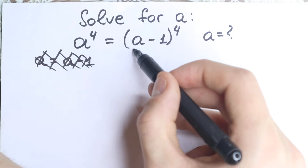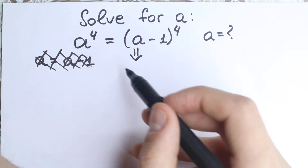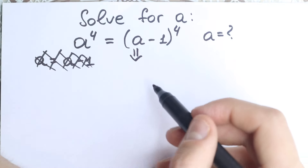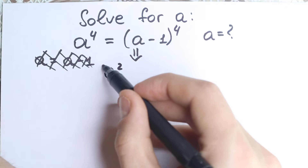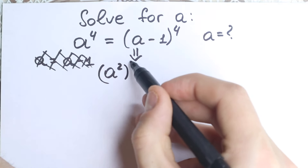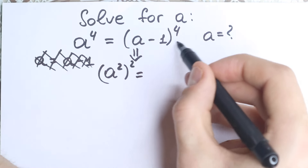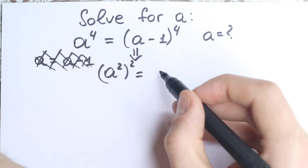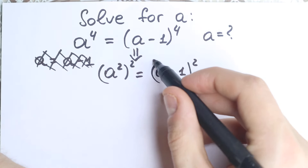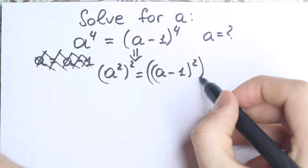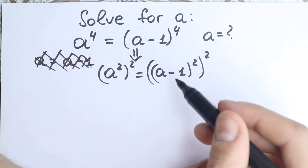So let's try to solve it step by step — I'm going to show you a really interesting approach. First of all we have a to the fourth power, and it's really great to express a to the fourth power as a-squared to the second power. Let's do the same with the other expression, so we have a minus one raised to the second power and once more to the second power — we just express this in another way, nothing has changed.